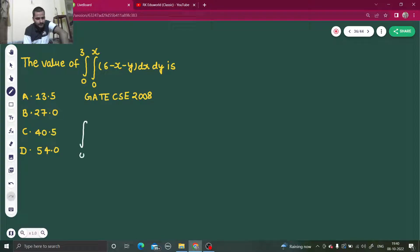We'll write 0 to 3. We'll take dx out and then we'll have 0 to x, 6 minus x minus y dy. So this is 0 to 3. And this will be now integration of 6 with respect to y, which will be 6y.